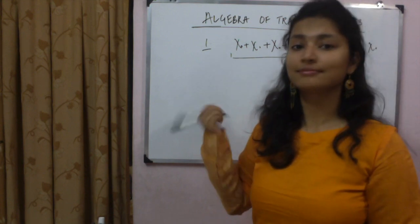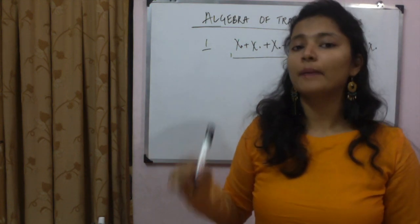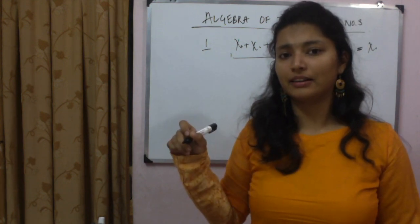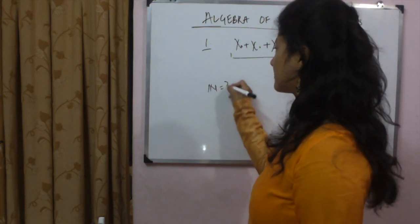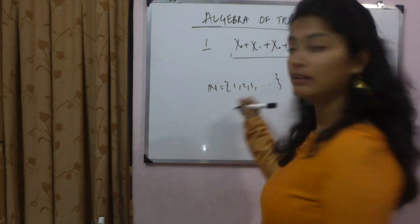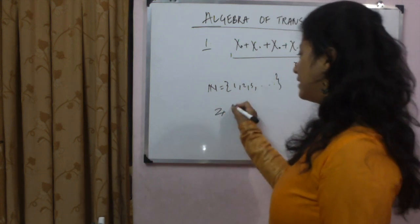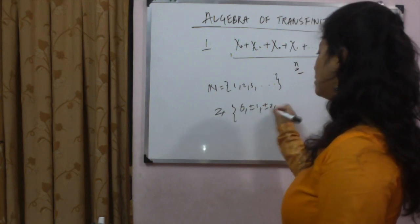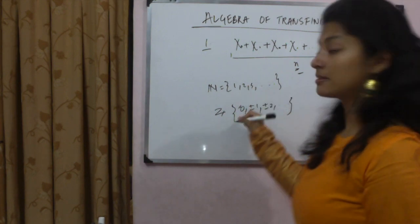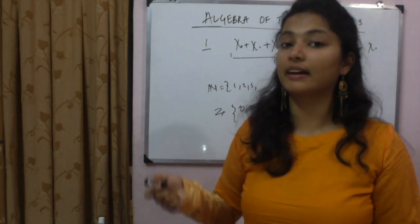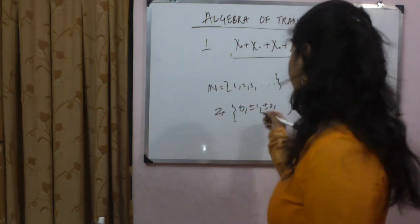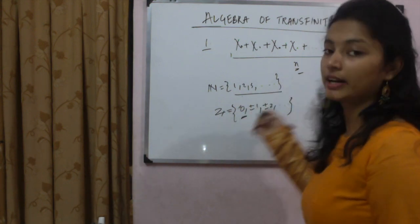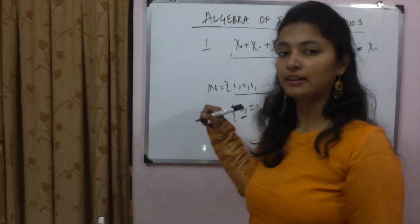Why? Let's take an example: natural numbers and integers. You might think the integer set is bigger than the natural numbers, because integers include positive, negative, and zero — like 0, ±1, ±2, and so on. But we can draw a bijection between them, so they have the same size. So if you combine ℵ₀ plus ℵ₀ plus 0, the cardinality of the resulting set is still ℵ₀, because a bijection exists.